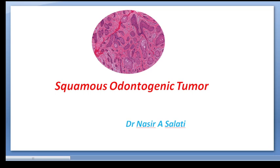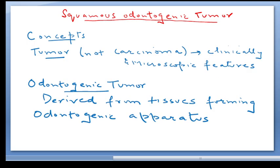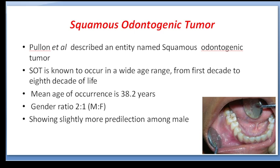Coming to another epithelial odontogenic tumor: the squamous odontogenic tumor. It is believed to arise from rests of Malassez in the periodontal ligament. It is a tumor, not a carcinoma, and is derived from tissues forming the odontogenic apparatus. Boulounge et al. first described this tumor.